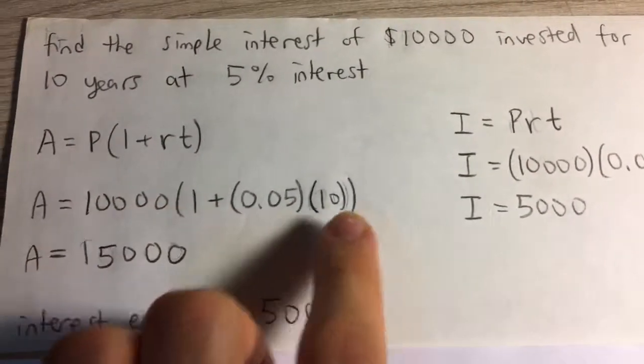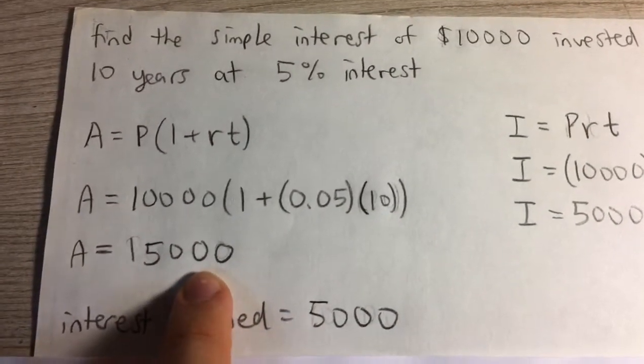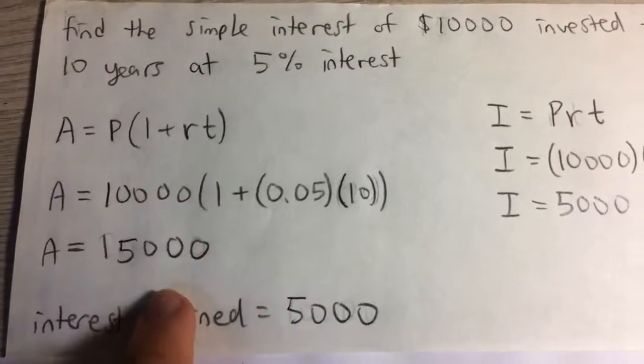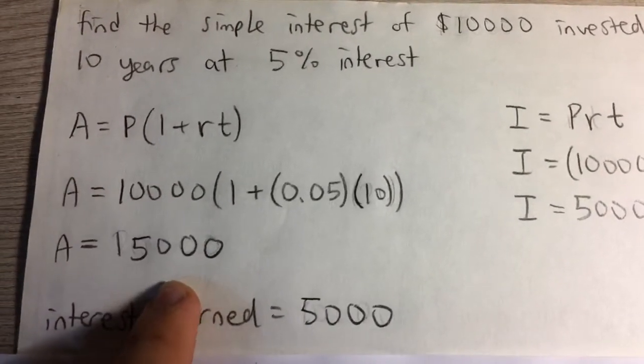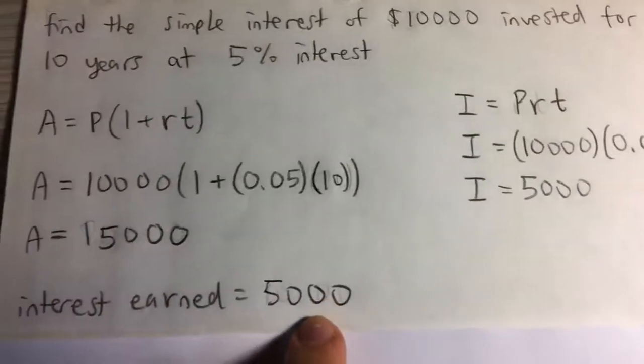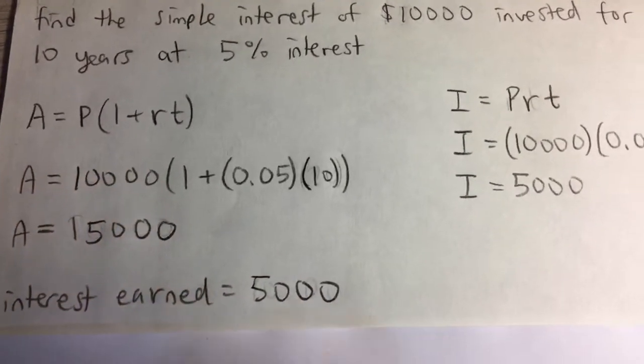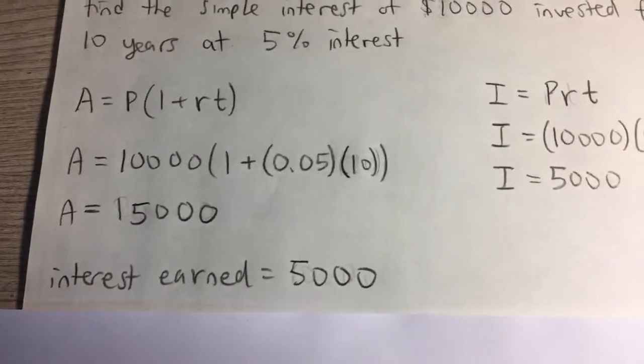If you evaluate this, you'll get $15,000. That means at the end of 10 years, we'll have $15,000. What this means is we earned $5,000 in interest. We subtract it from the original amount, we get $5,000 of interest earned.